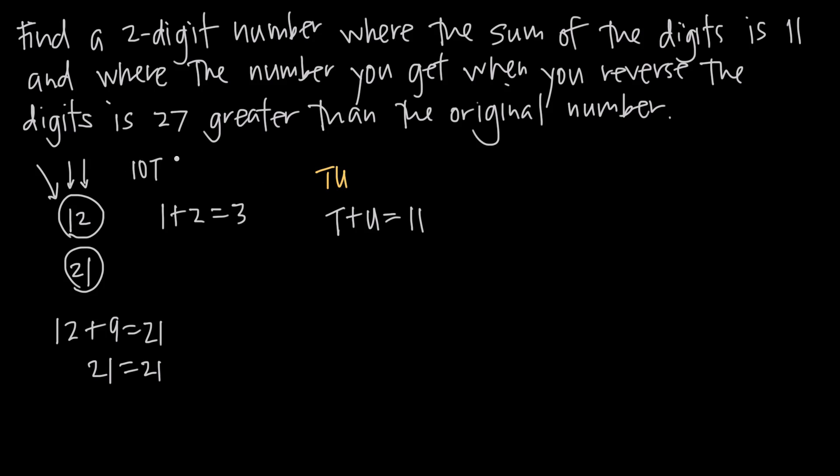We would say 10 times t plus 1 times u because the tens place is worth 10 and the units place is worth 1. In this original example here with 12, we have 10 times 1 because 1 is in the tens place, and we have 1 times 2 because 2 is in the units place, and that would give us 12.